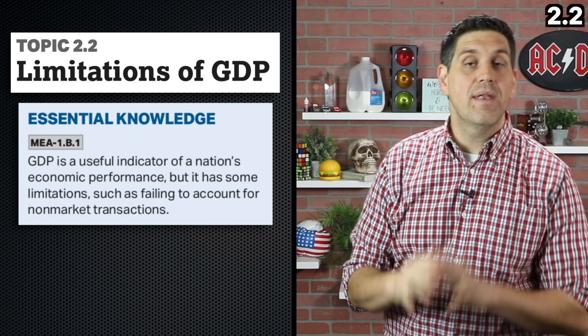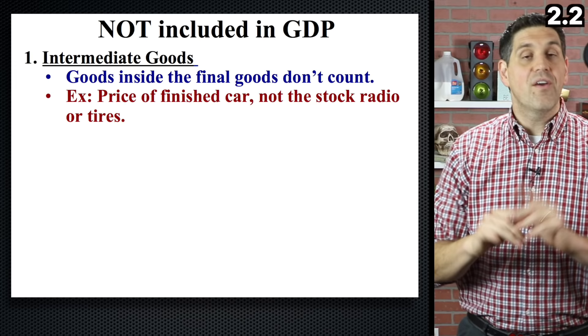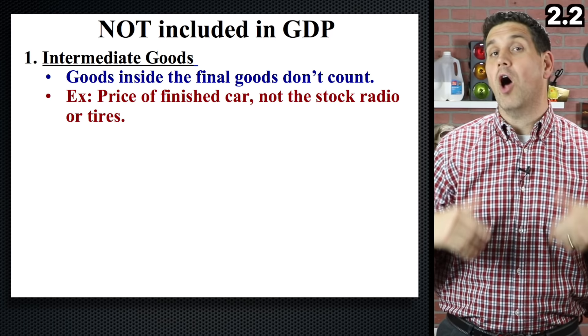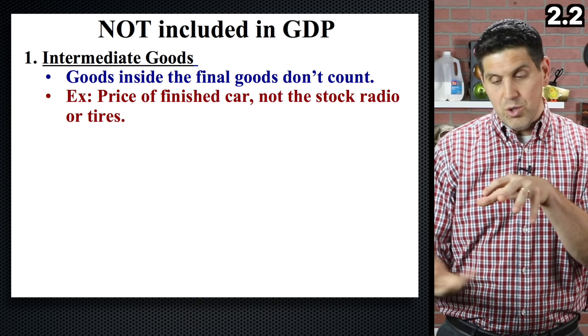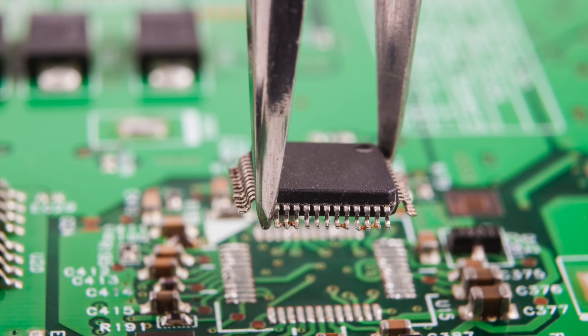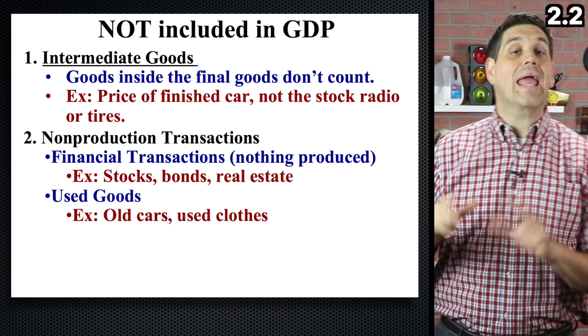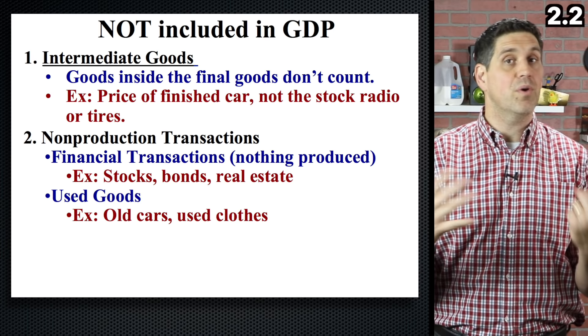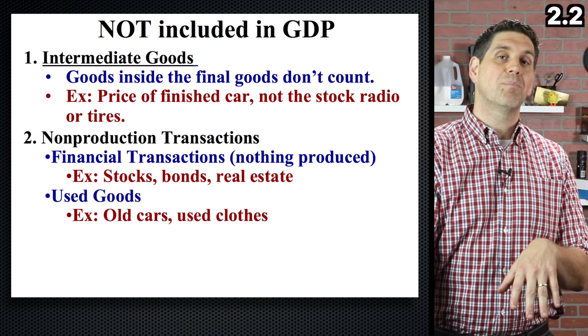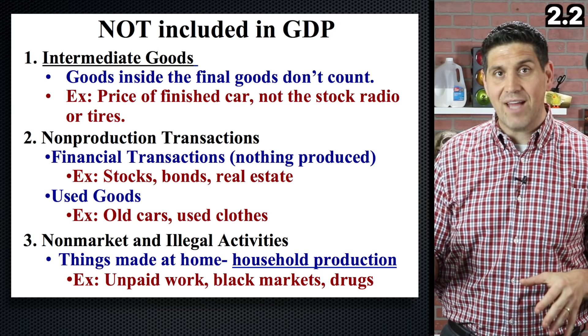Now I'm moving on to topic 2.2, where we're still talking about GDP but discussing its limitations. The first thing to remember is that GDP doesn't include all goods and services. For example, intermediate goods — goods used in the production of a final good — don't count towards GDP. The microchip inside your phone doesn't count separately; it's part of the finished product. GDP also doesn't include non-production transactions, so the stock market doesn't count. Used goods don't count for this year if sold in a previous year, and illegal or non-market transactions don't count because we don't know they exist.